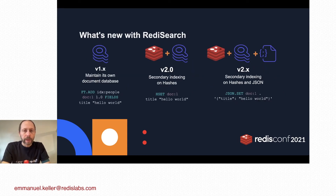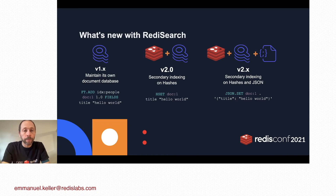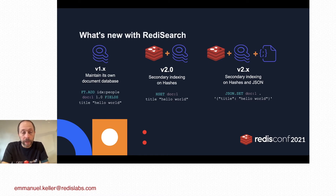What's new with Redis Search? Redis Search has a long history. Version 1 maintained its own document database with its own data type and a dedicated FT.ADD command. With version 2.0, Redis Search became a secondary indexing solution able to index hashes directly, so you use standard Redis commands to update hashes and the index is automatically updated atomically in near real time. With the new version, Redis Search is able to consume the API provided by Redis JSON and index JSON documents.